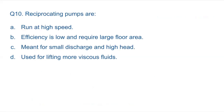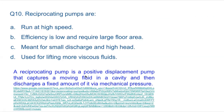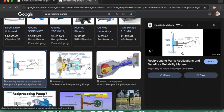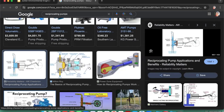Question 10: Reciprocating pumps — a reciprocating pump is a positive displacement pump that captures a moving fluid in a cavity and then discharges a fixed amount of it via mechanical pressure. The pump has an inlet, then pumping action, then outlet, regulating the fluid discharge. Reciprocating pumps are meant for small discharge and high head. Answer: C — meant for small discharge and high head.